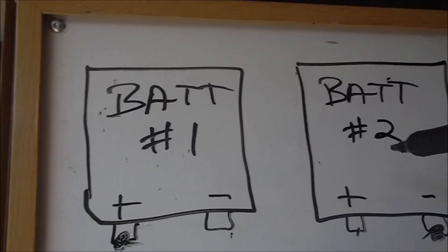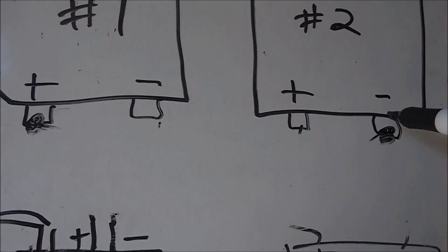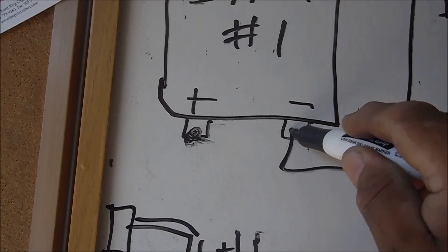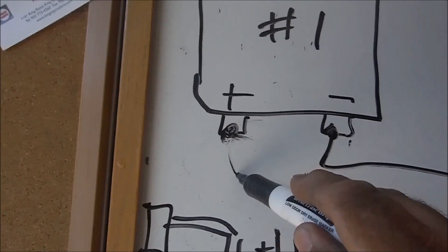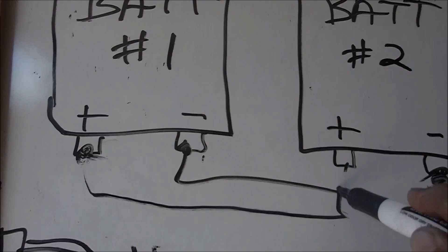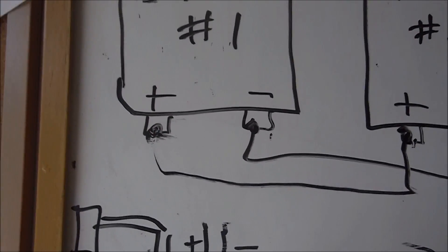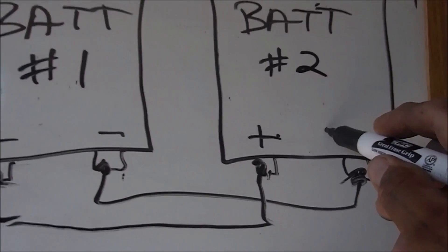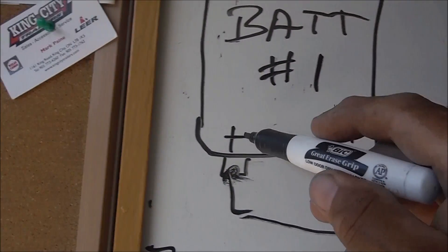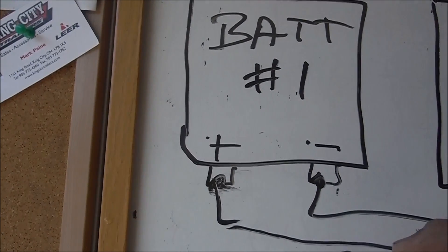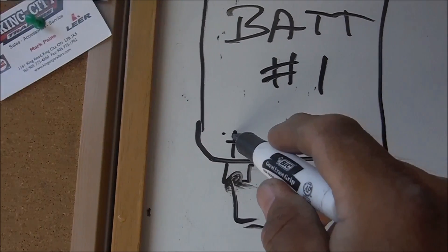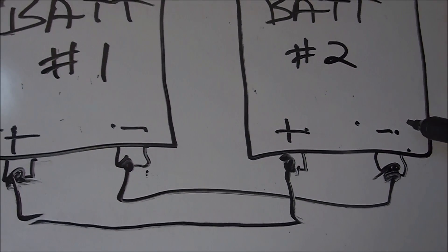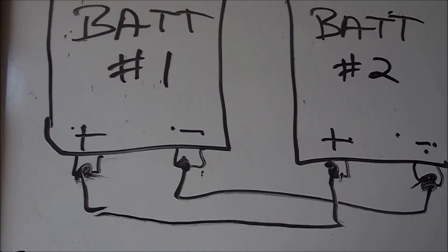Okay, so we have the batteries here, battery number one and battery number two. What I've done is I've taken the negative of this one, gone over to the negative of this one. Positive of this one, gone over to the positive of this one here. And if you take a reading between this point and this point should be 12 to 13 volts. From this point to this point should be 12 to 13 volts, and then from this point, this positive to this negative, or vice versa, should be 12 to 13 volts, right?